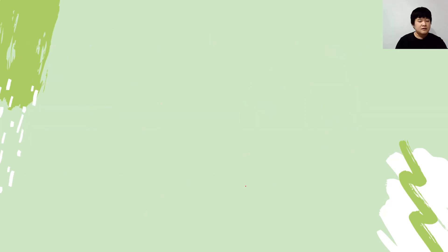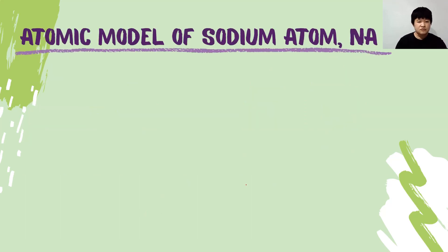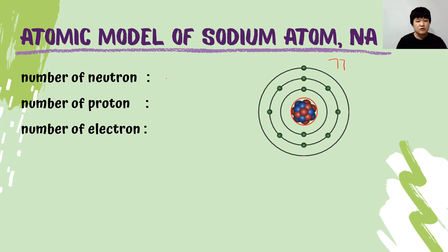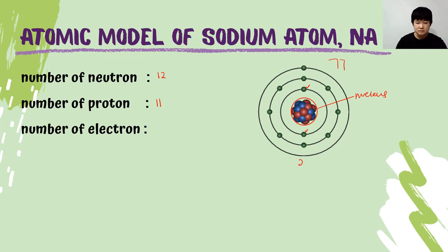The next example on the screen is the sodium atom. This is the atomic model of the sodium atom. Sodium has 12 neutrons in the nucleus, so the number of neutrons is 12. Sodium also has 11 protons in the nucleus, so the number of protons is 11. How many electrons does sodium have? As you can see, we have 2 on the first shell and 8 on the second shell.